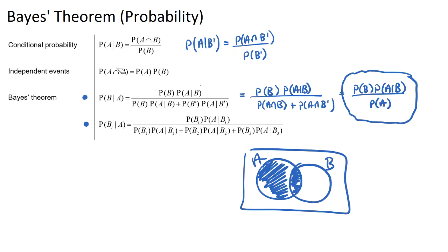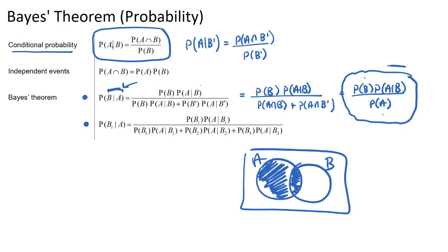Here is the key difference between the conditional probability formula and Bayes Theorem. Bayes Theorem contains both P(B|A) and P(A|B) in the same equation, along with only P(B) and P(A). So it's a conditional probability formula that has both conditions in it — if you know one, you can find the other. You can't do that with the standard conditional probability formula, because P(A|B) = P(A∩B)/P(B) requires knowing P(A∩B), which doesn't even appear in the Bayes Theorem equation.